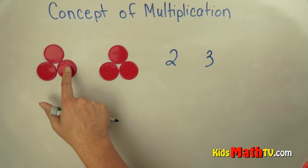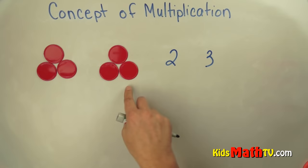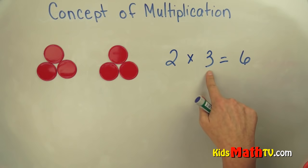So if I count them, 1, 2, 3, 4, 5, 6, there are six. So two groups of three gives us six chips. And the way we write this in a multiplication problem is two times three equals six. Or two groups of three is six.